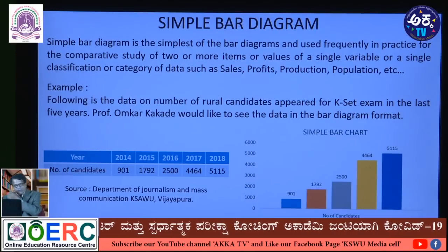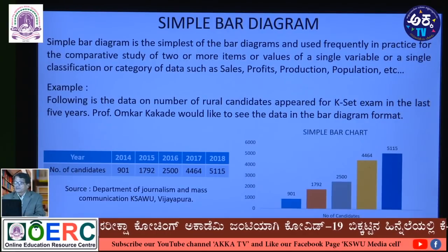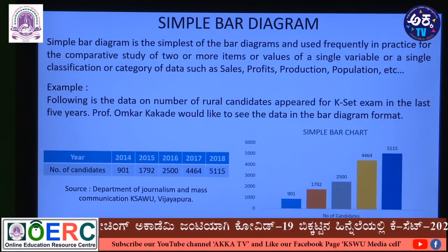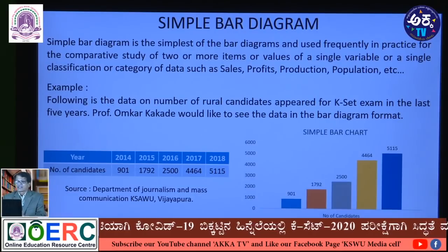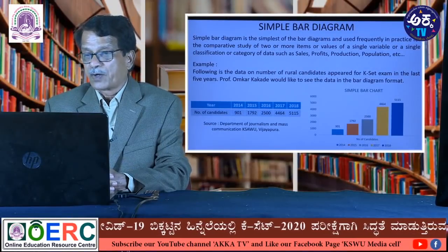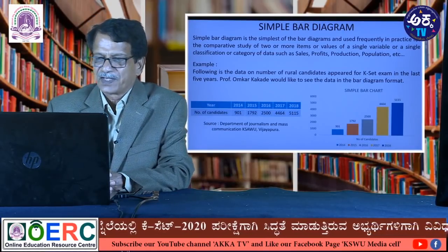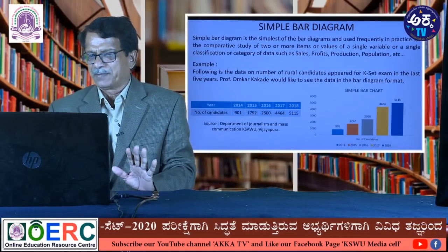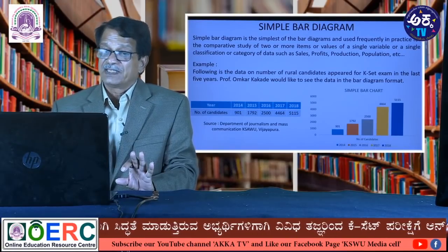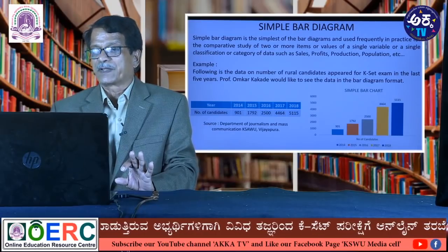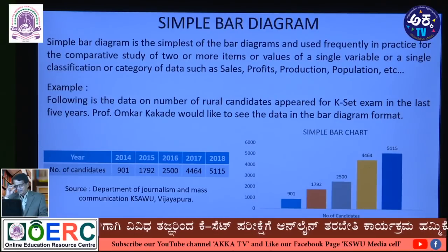Let us look at simple bar diagram. Simple bar diagram is the simplest of bar diagrams and is used frequently for comparative study of two or more items or values of a single variable or category of data — such as sales, profit, production, population, or size of different geographical regions. Basically, simple bars are erected on respective categories with the height of those bars proportional to the respective values.